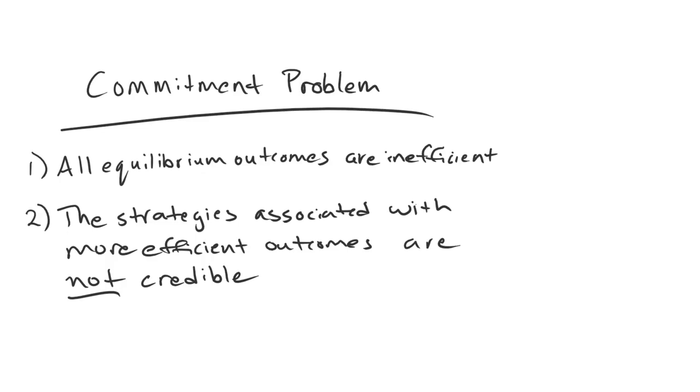So the name of this mechanism is commitment problem, and each of the components is dealing with one of those two words. This second component is dealing with the commitment half of the story. The strategies associated with the more efficient outcomes are not credible.